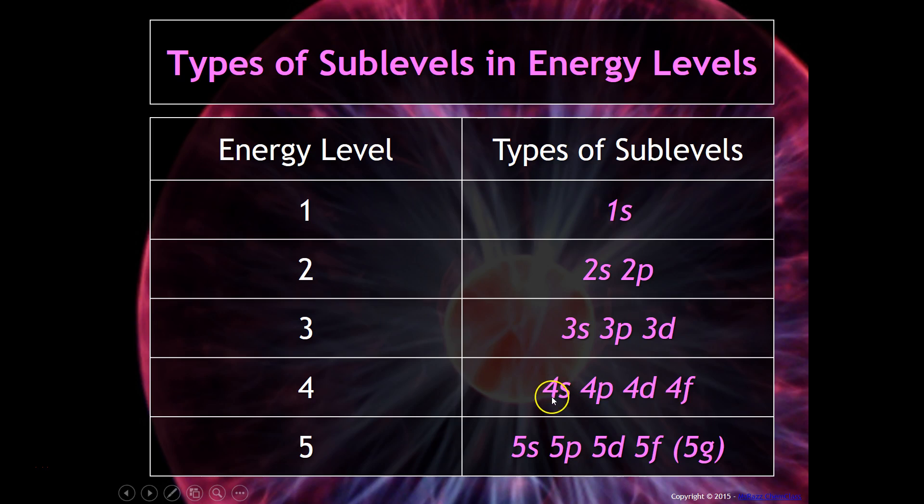A fourth would have 4s, 4p, 4d, and 4f. A fifth would have 5s, 5p, 5d, 5f, and 5g. If you notice, 5g is in parentheses, mostly because that's incredibly high energy and we don't really ever get there. But that's the pattern.